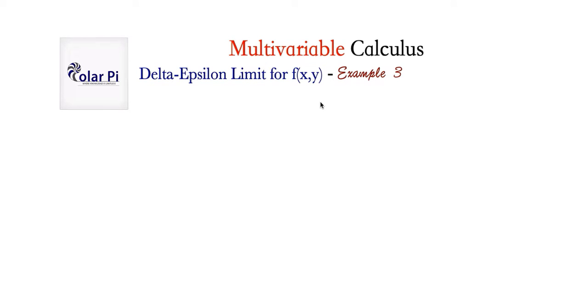Hey guys, welcome. So if you haven't already done so, watch the previous three examples — that's examples 0, 1, and 2. A quick recap of what we've done so far: in example 0, we looked at the big picture and saw how delta-epsilon limits make sense for functions of two variables, and we also explained why they work. That's example 0, and that's the most important example.